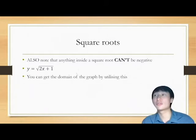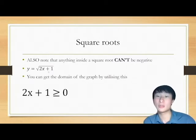Next up, square roots. Remember that anything inside square roots can't be negative. 2x plus 1 can't be negative in methods. You can get the domain of the graph by utilizing this. For example, 2x plus 1 is greater than or equal to 0 is the domain of the square root graph.